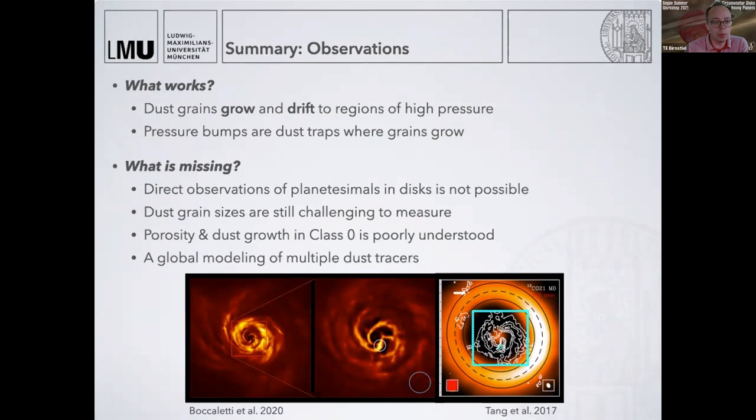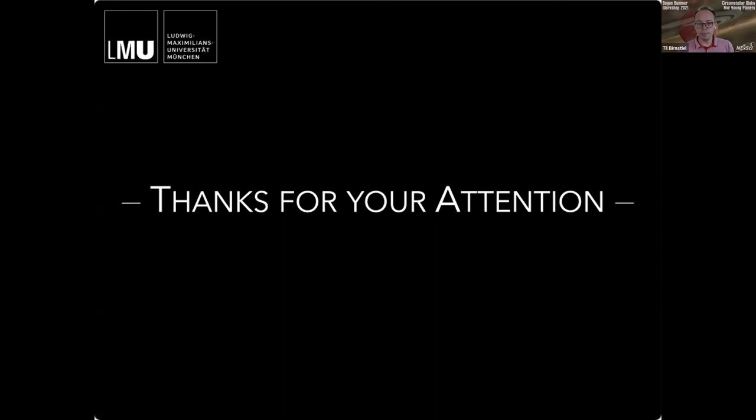That brings me to the end of this talk. The summary of the observational part: the parts that work are that dust particles have to grow and drift to explain some of these traps, so that part seems to be working. Pressure bumps are where dust particles grow and where we even think they might be forming planetesimals. But there's a lot of open questions in the field. For example, dust grain sizes and porosity are still very difficult to understand. Also, the growth at early stages is poorly understood, and we really lack global modeling for the excellent data we have right now, where we see interesting features in scattered light and very different features at ALMA wavelengths. That's all from my side. Thanks for your attention, and I'm happy to take any questions.